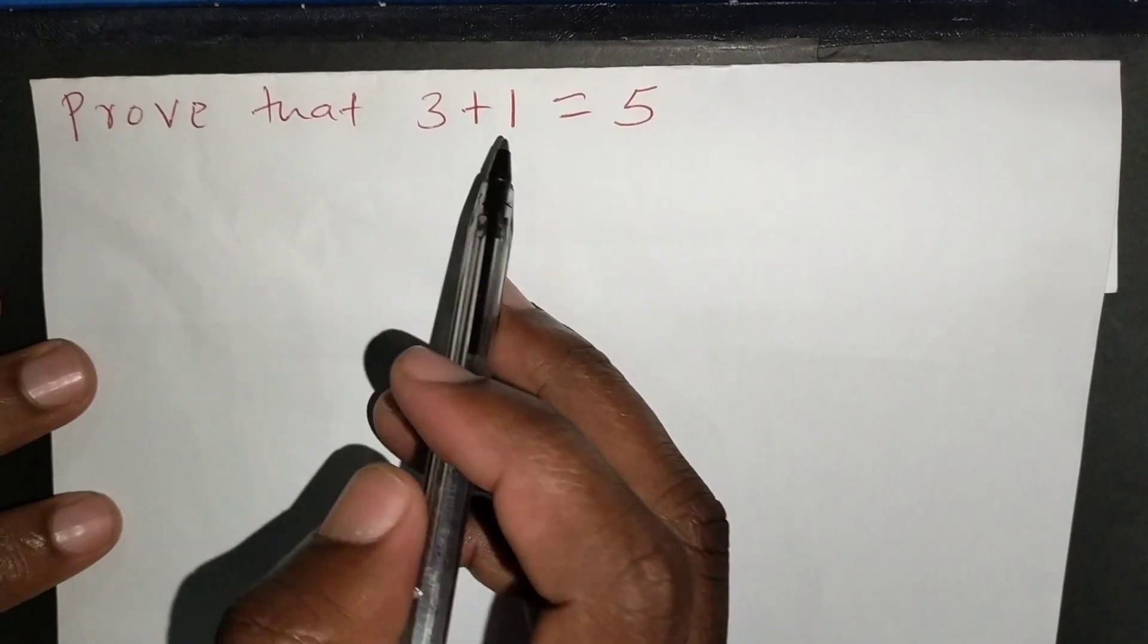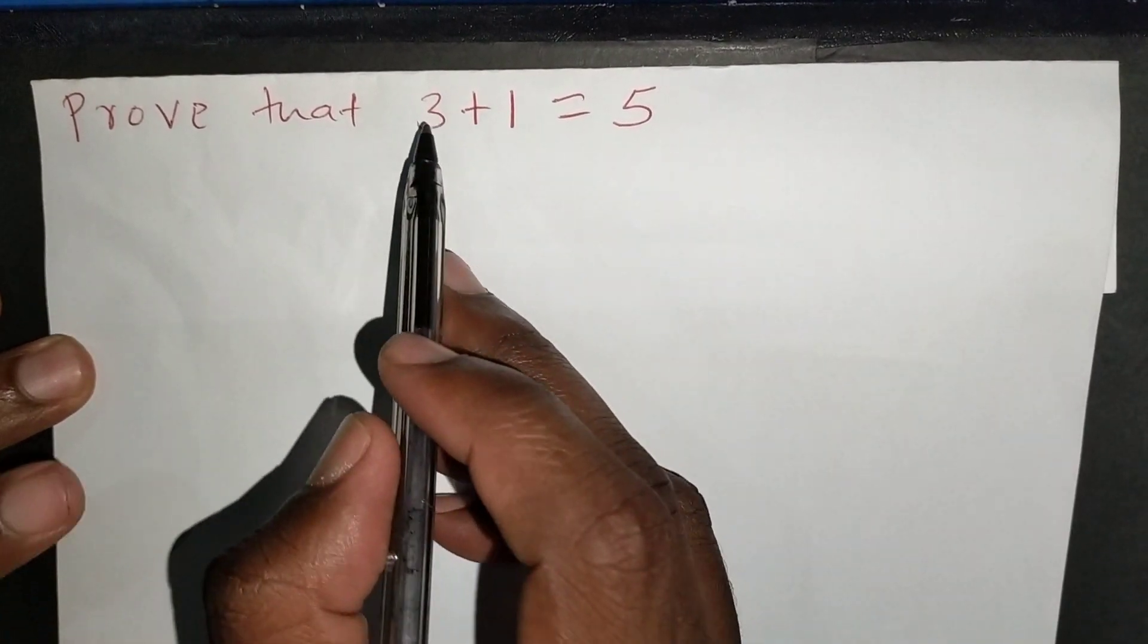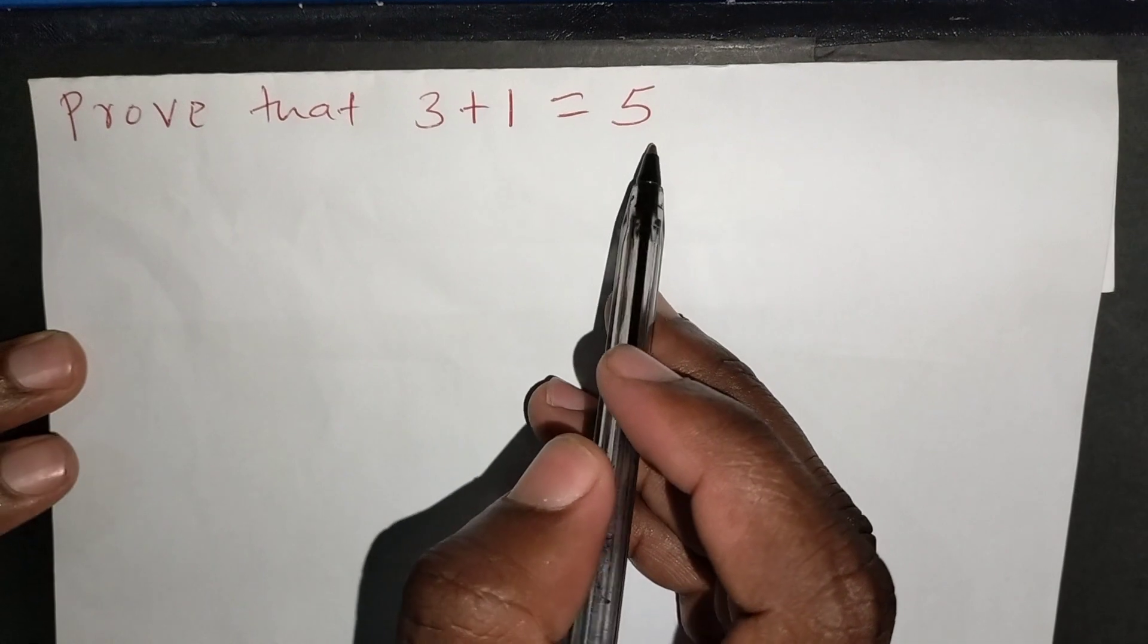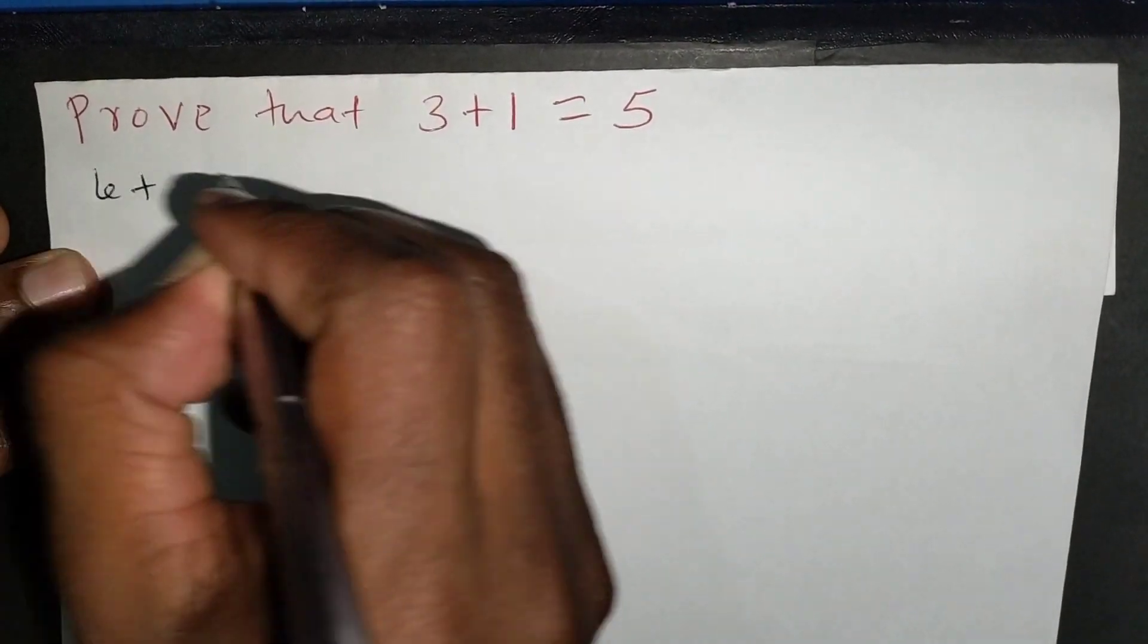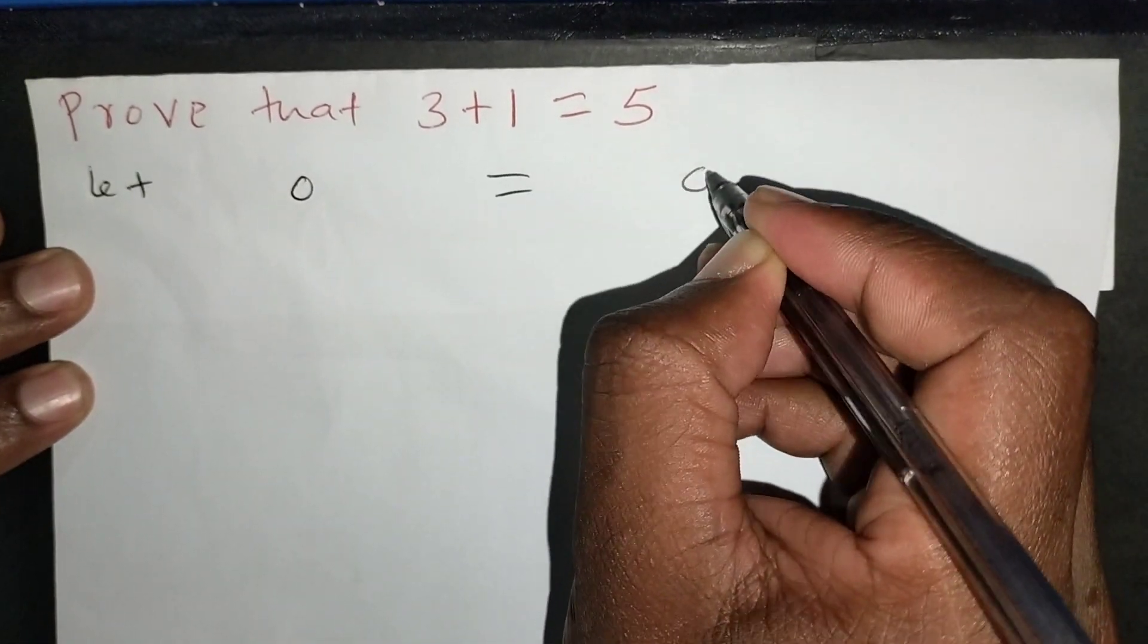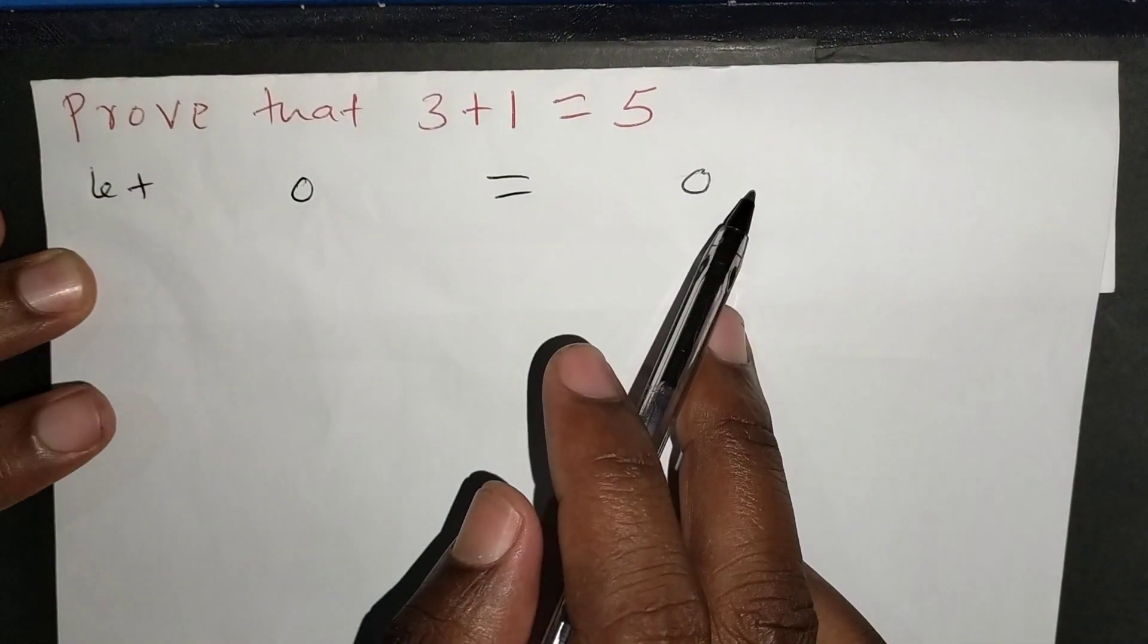Now, today we want to prove a simple mathematical equation which states that 3 plus 1 can be equal to 5. In order for us to achieve that, I'll start by letting 0 be equal to 0. We know that this is mathematically true.